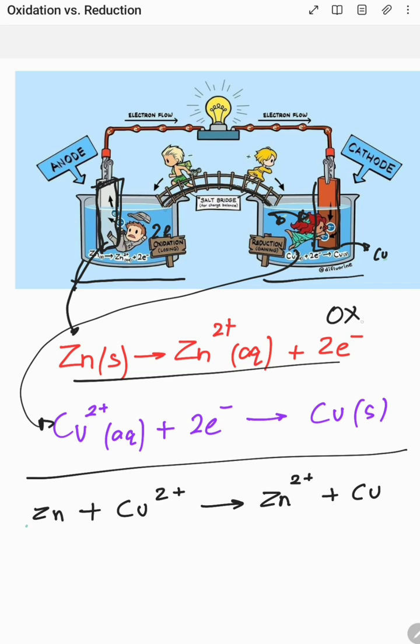Similarly, the process in which the electrode on the right, the copper electrode, gains electrons is called a reduction process.